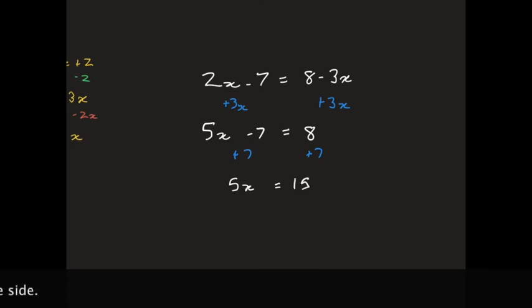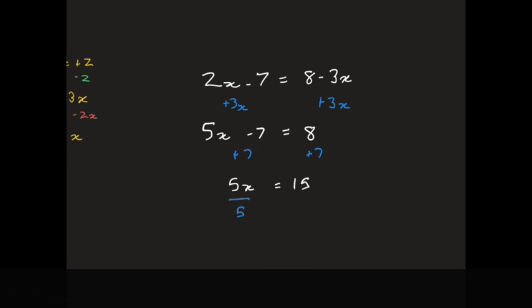Therefore, I must divide both sides by 5 to isolate the x. 5 divided by 5 is 1 and 15 divided by 5 is 3. x is equal to 3.